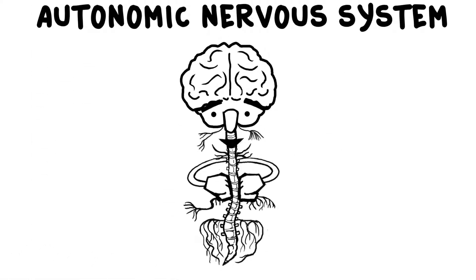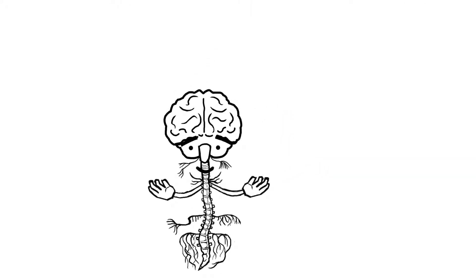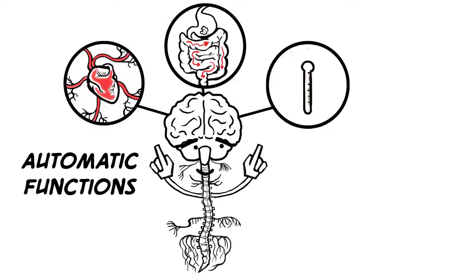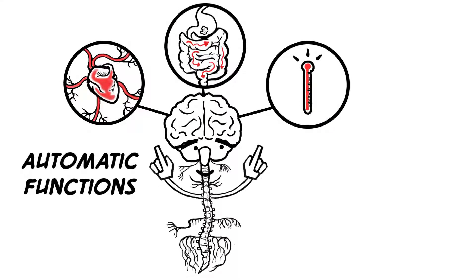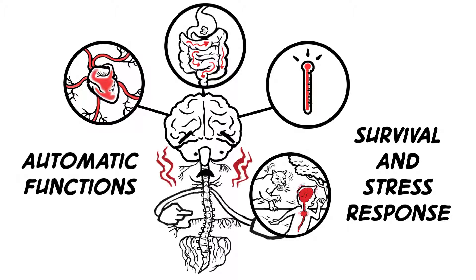Meet your autonomic nervous system. Let's call it ANS. ANS takes care of a lot of your automatic functions, like your heartbeat, digestion, and body temperature. ANS also manages your survival and stress response, working to keep you alive when your life is in danger.